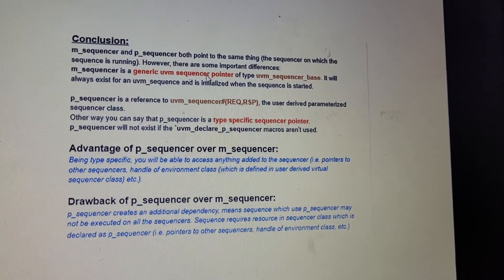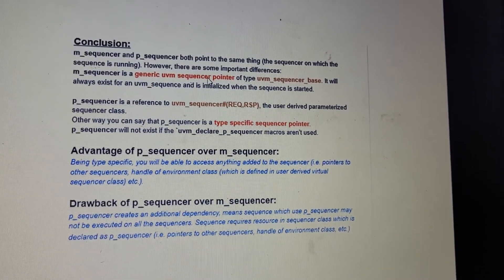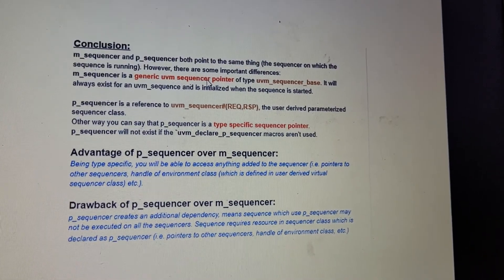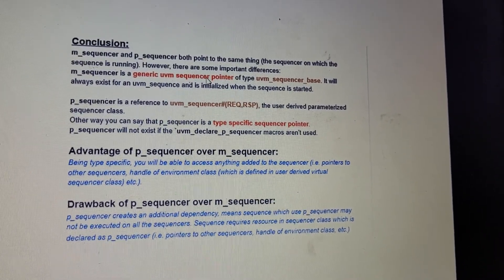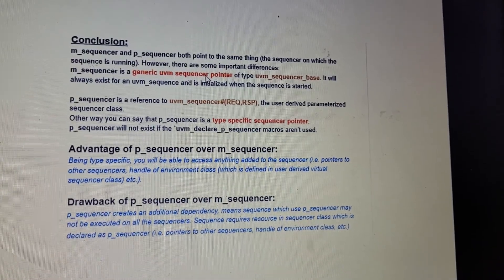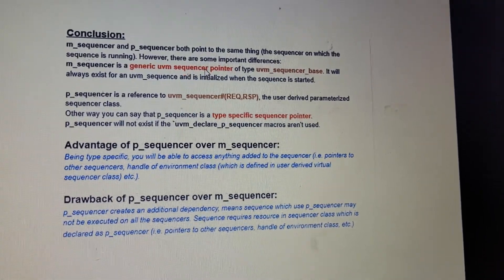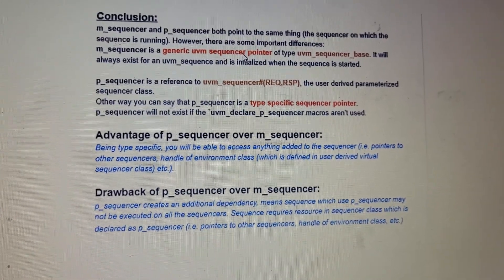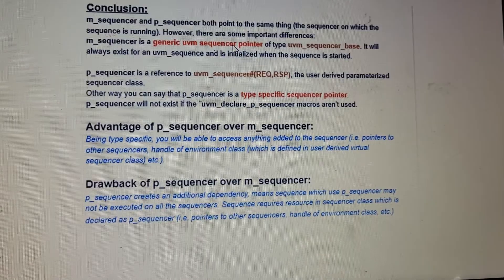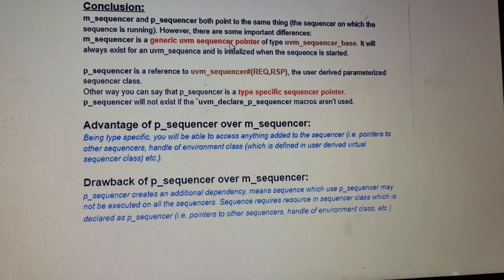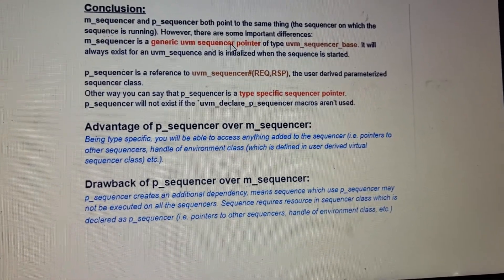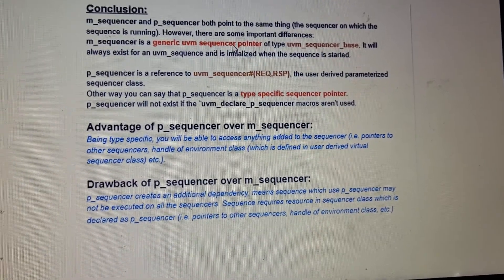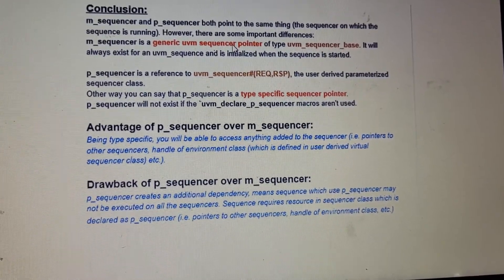p_sequencer will not exist without UVM macros. The advantage is that if you want to add handles to the sequencer, they can be accessed via p_sequencer. The drawback is it creates an additional dependency — a sequence using p_sequencer may not be executed on all sequencers, because it requires specific resources in the sequencer class declared as p_sequencer.